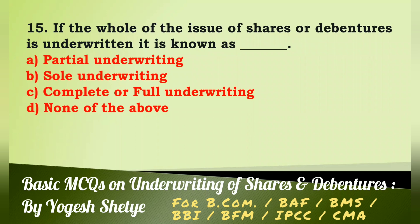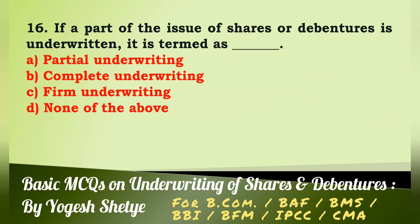Question 15: If the whole of the issue of shares or debentures is underwritten, it is known as — (a) partial underwriting, (b) sole underwriting, (c) complete or full underwriting, (d) none of the above. Answer: It is known as complete or full underwriting. Answer C.